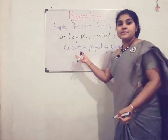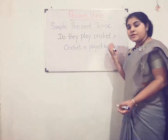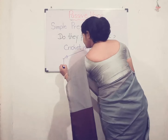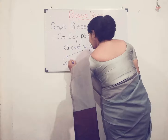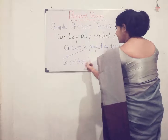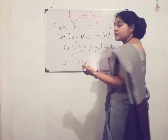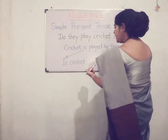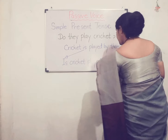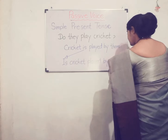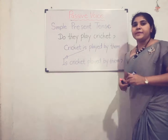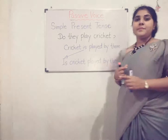Then let's pick the question from this passive voice sentence. As the question word, you can take 'is', then the subject 'cricket'. There is no need to repeat 'is' because we already took it as the question word. So: 'Is cricket played by them?' The question form of 'Do they play cricket?' in passive voice is 'Is cricket played by them?'